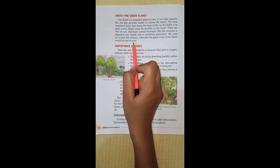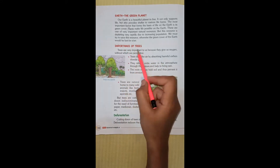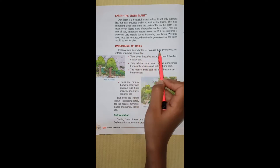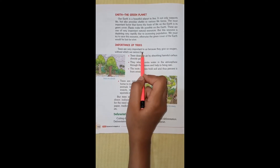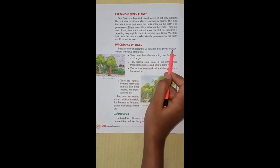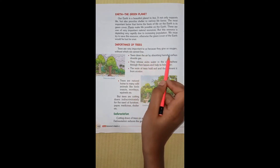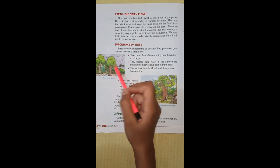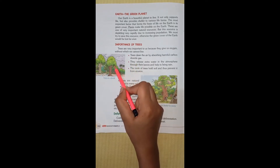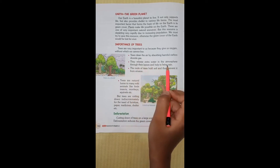Importance of trees: Trees are very important to us because they give oxygen, without which we cannot live. Trees clean the air by absorbing harmful carbon dioxide gas. They also release extra water into the atmosphere through their leaves and help to bring rain.